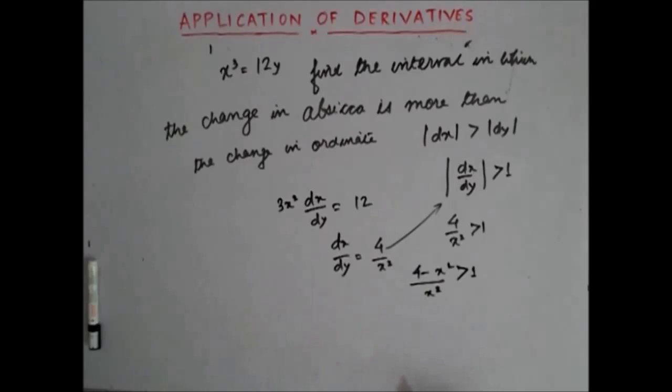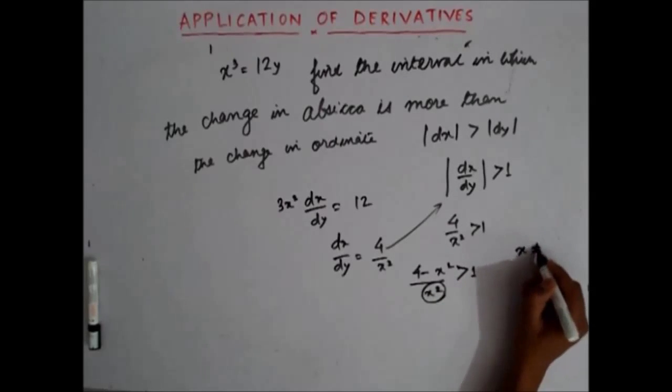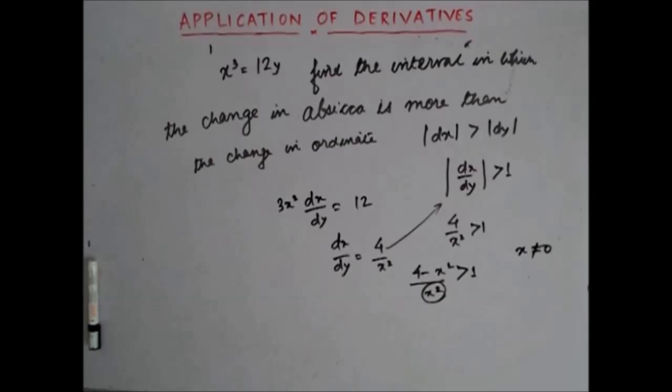Now here you see that in the denominator you have a term x square. That means what? x should not be equal to 0 because when x becomes 0, this becomes an undetermined quantity. So first condition is that x should not be equal to 0.